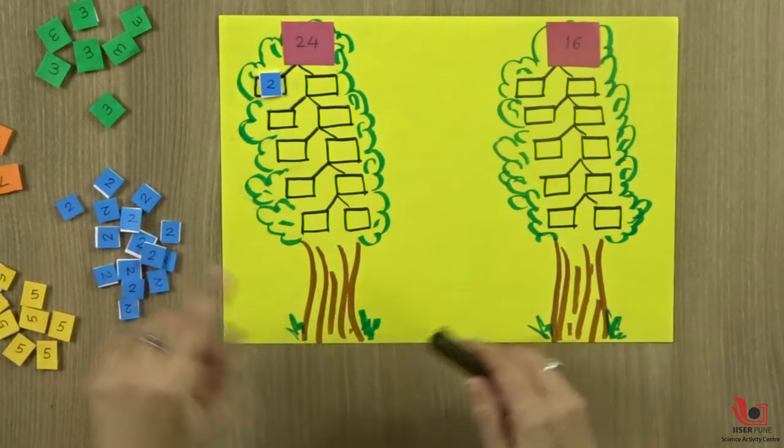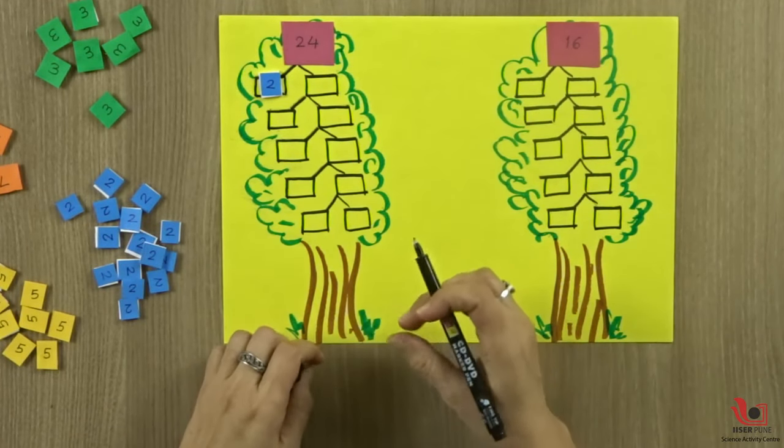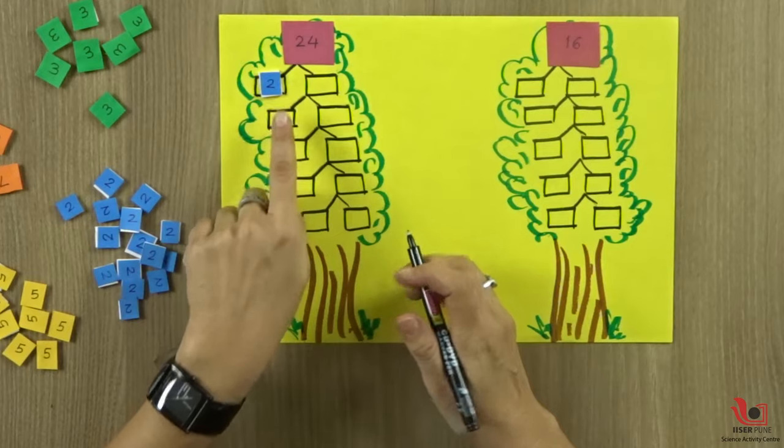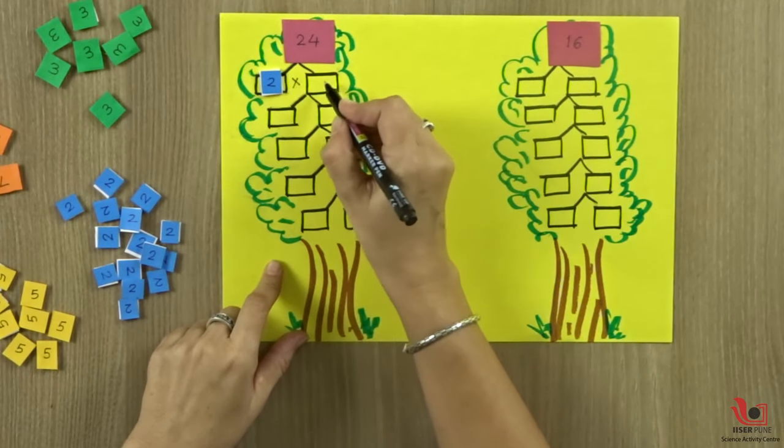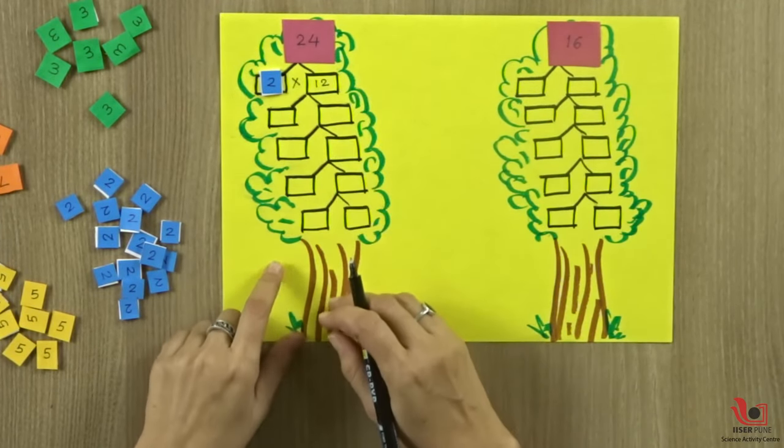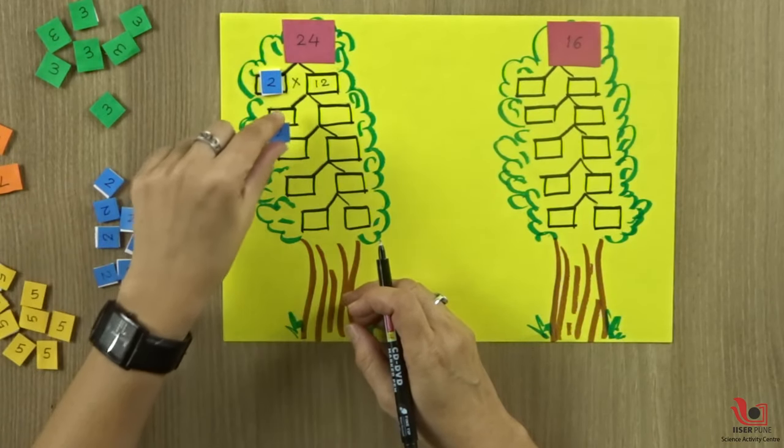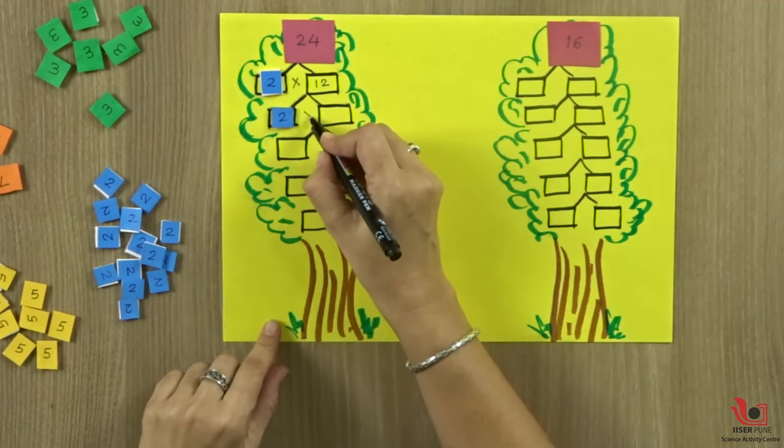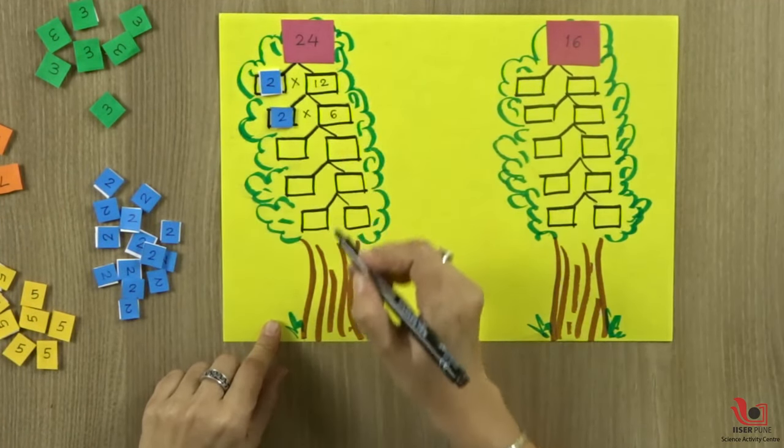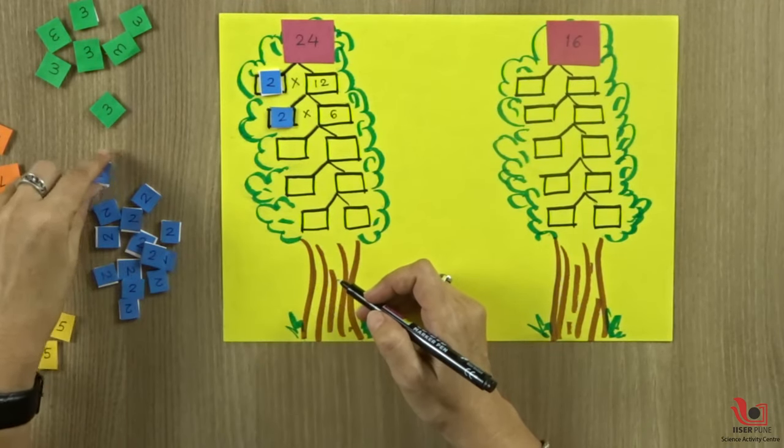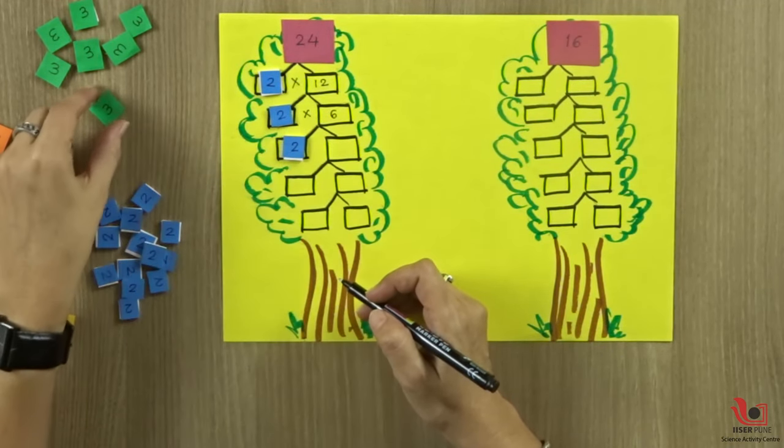All prime numbers are colored. Composite numbers will be written with a pen. So 24 is 2 multiplied by 12. 12 further can be factorized as 2 multiplied by 6. 6 further will be factorized as 2 multiplied by 3. The prime factorization of 24 is complete.